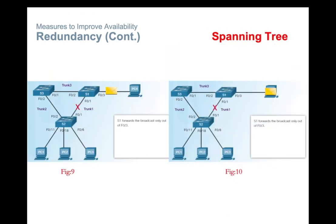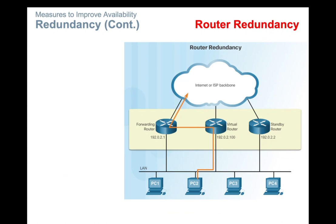Another case is router redundancy. The default gateway is typically the router that provides devices access to the rest of the network or to the internet. If there is only one router serving as the default gateway, it becomes a single point of failure. The organization can choose to install an additional standby router. As shown in the diagram, the forwarding router and the standby router use a redundancy protocol to determine which router should take the active role in forwarding traffic.